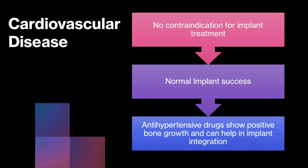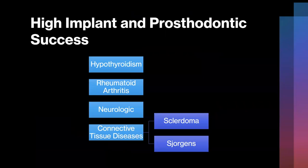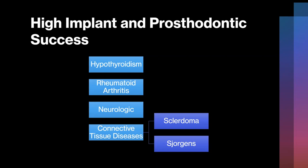Moving into cardiovascular disease: the literature shows no contraindication for implant treatment — they have a normal success rate. Interestingly, patients on hypertensive medications show positive bone growth that can actually help with implant integration. Other conditions — hyperthyroidism, rheumatoid arthritis, neurological diseases like Alzheimer's and dementia, connective tissue diseases like scleroderma and Sjögren's — the literature shows no contraindication. The medications most of these patients take have very little effect on dental implants, so you're safe to place implants across all these conditions.